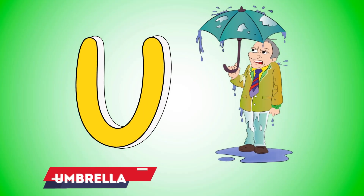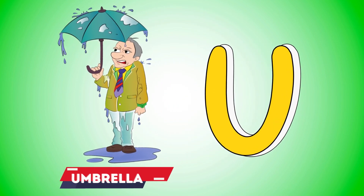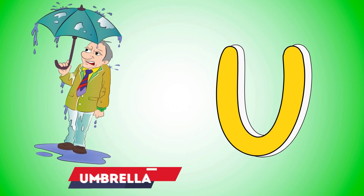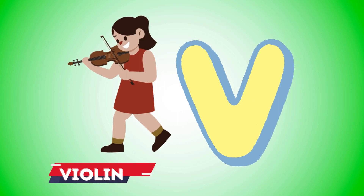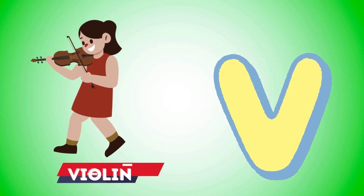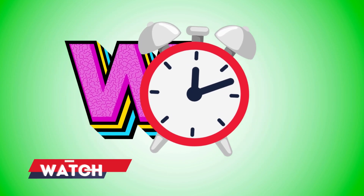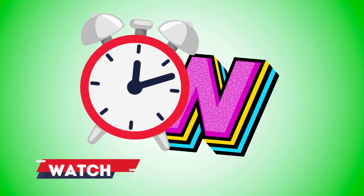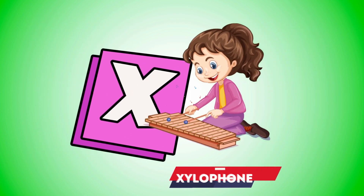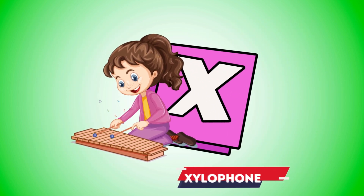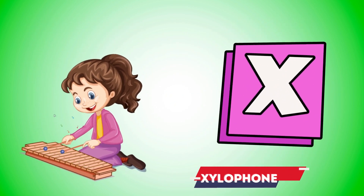U is for umbrella, u-u-umbrella. V is for violin, v-v-violin. W is for watch, w-w-watch. X is for xylophone, z-z-xylophone.